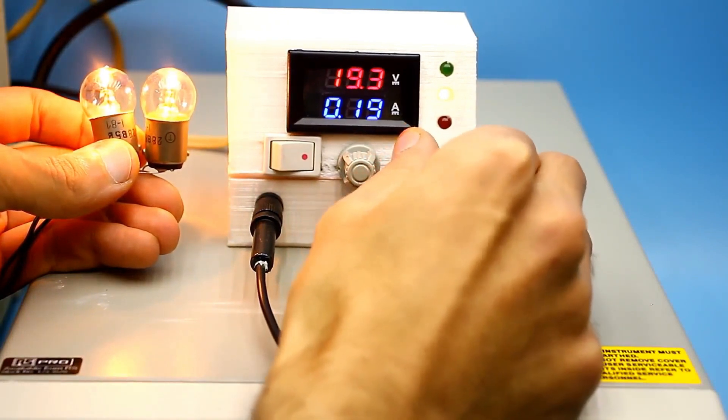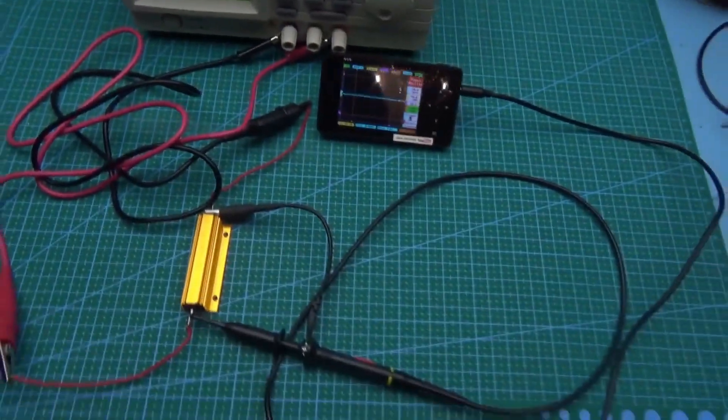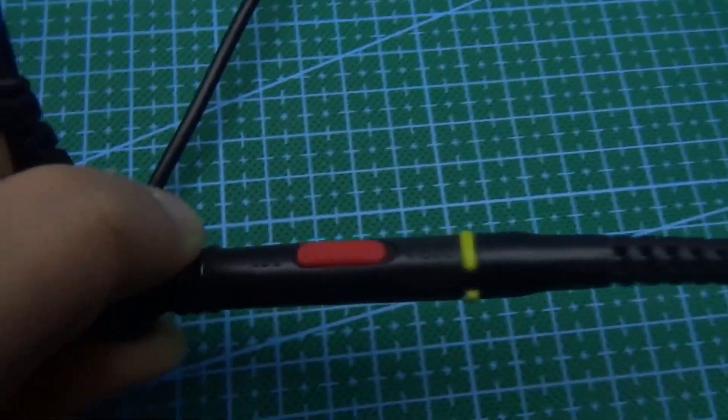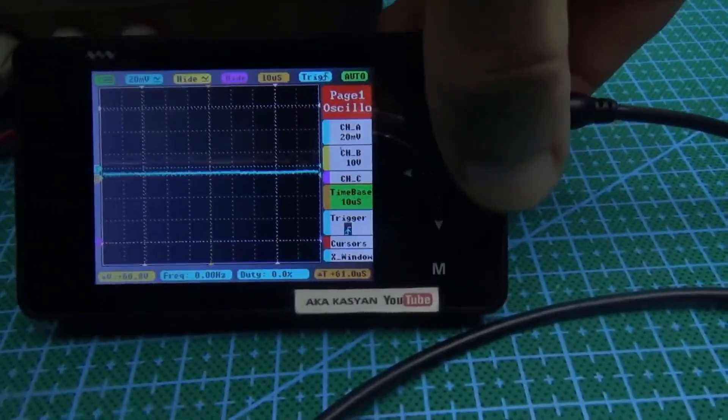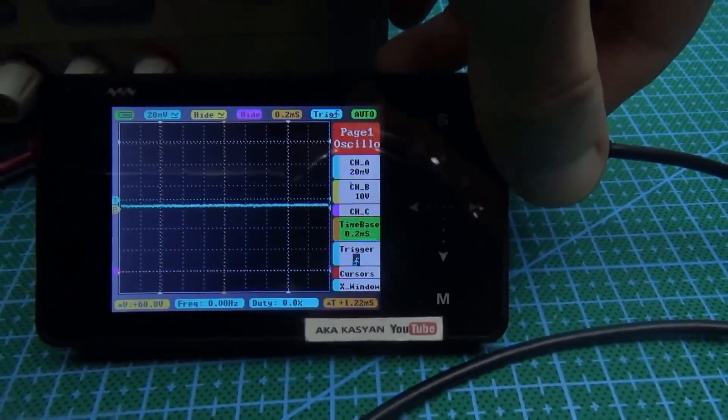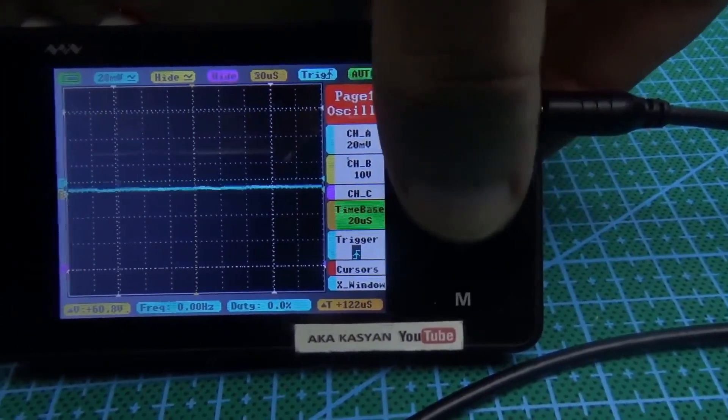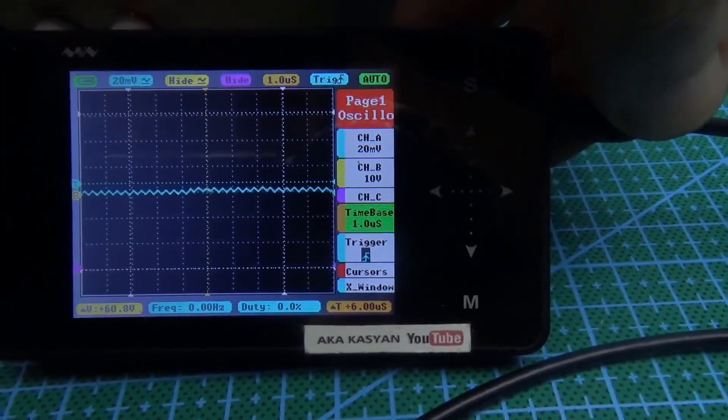For example, the IPS 405 at the same current of 1 amp has voltage ripple of less than 5 mV. Although it's silly to compare a unit made from cheap modules with a professional power supply, which costs about 30 times more than the homemade one.